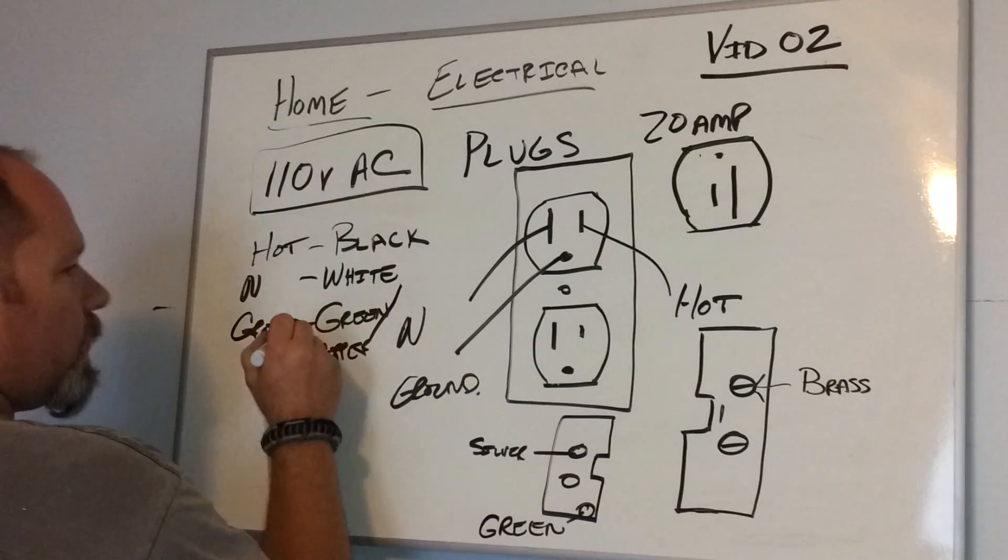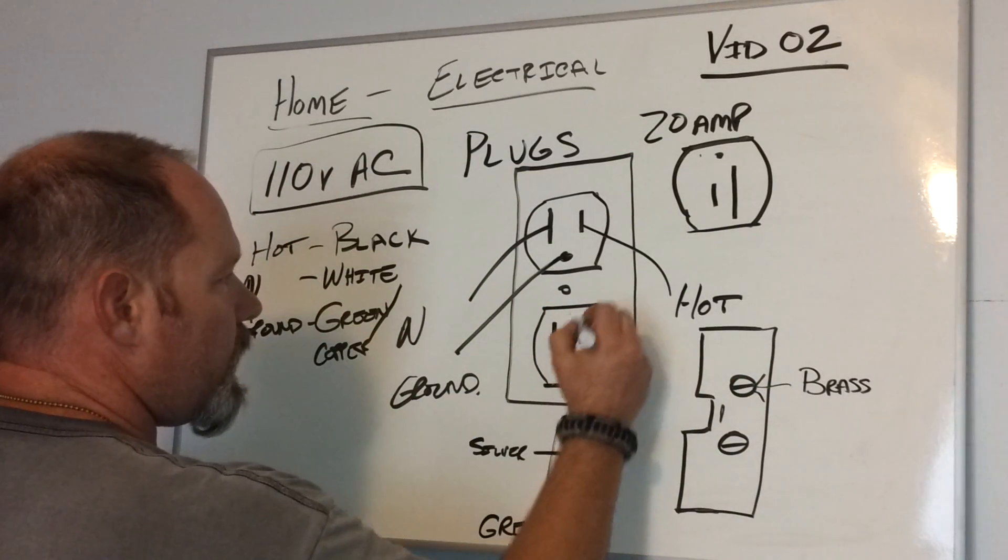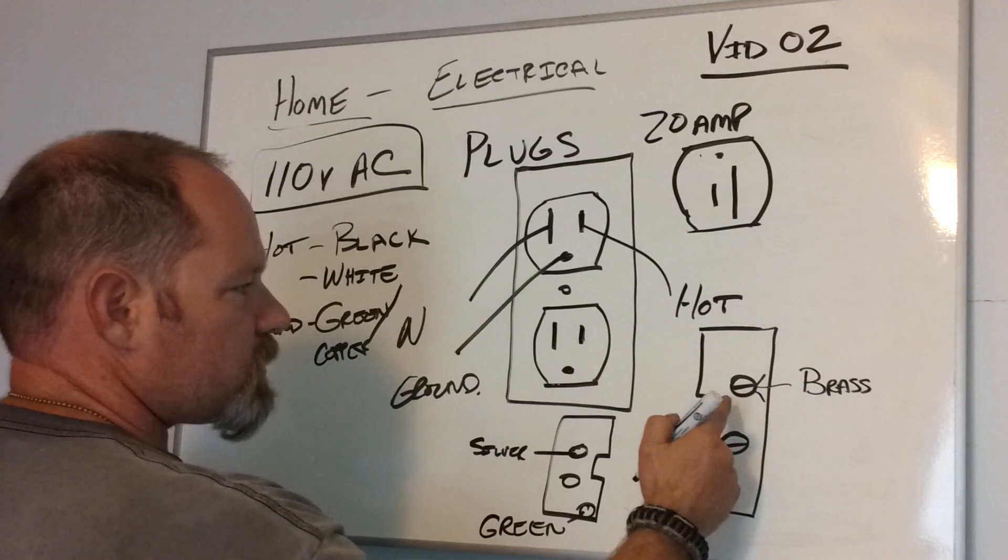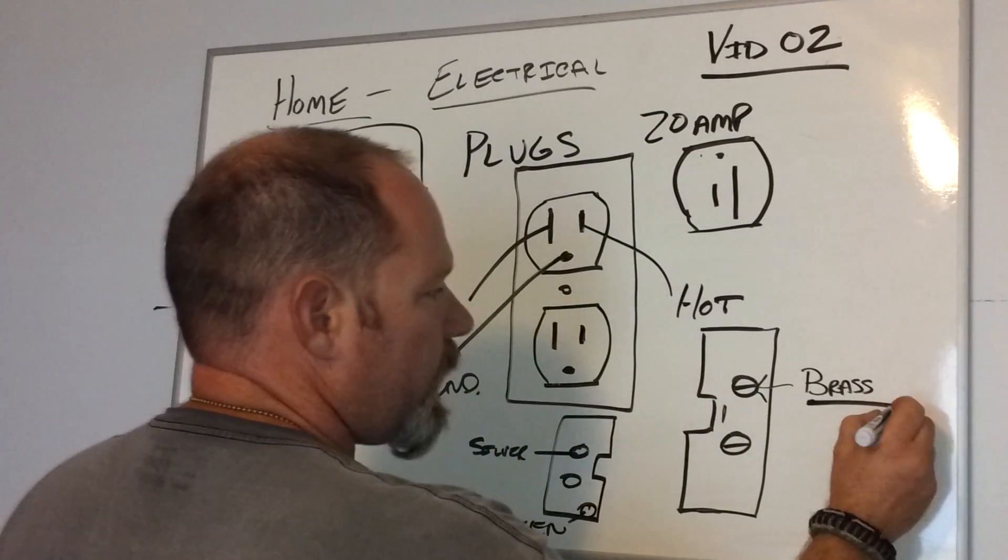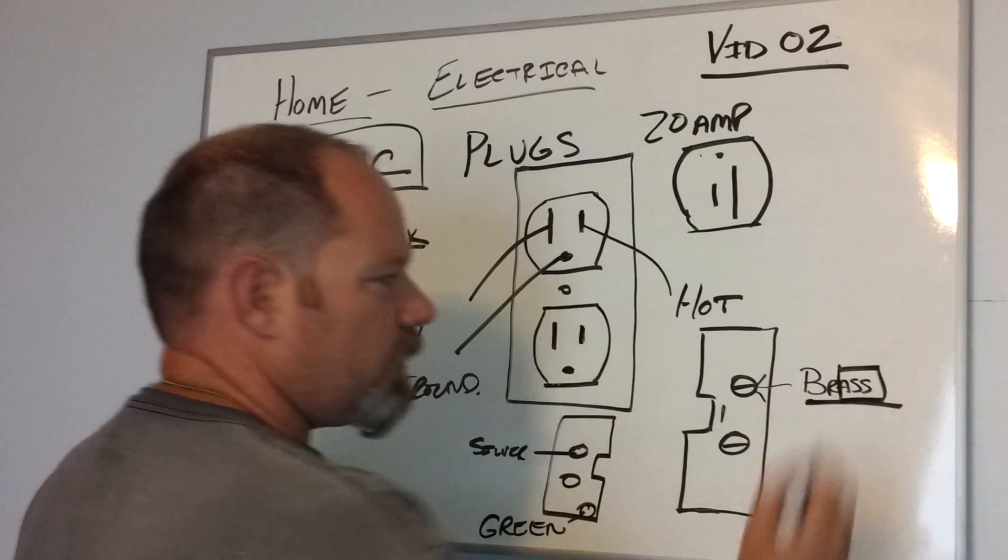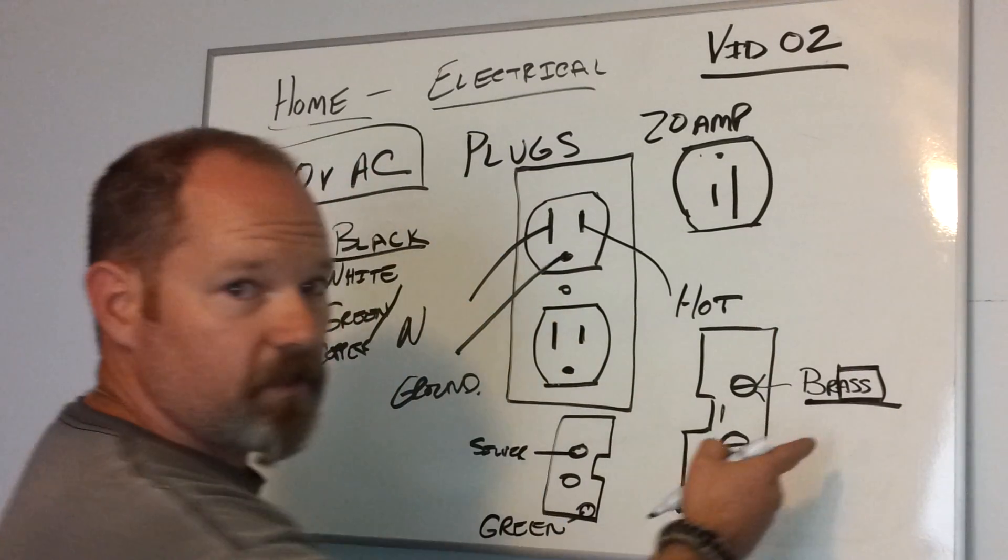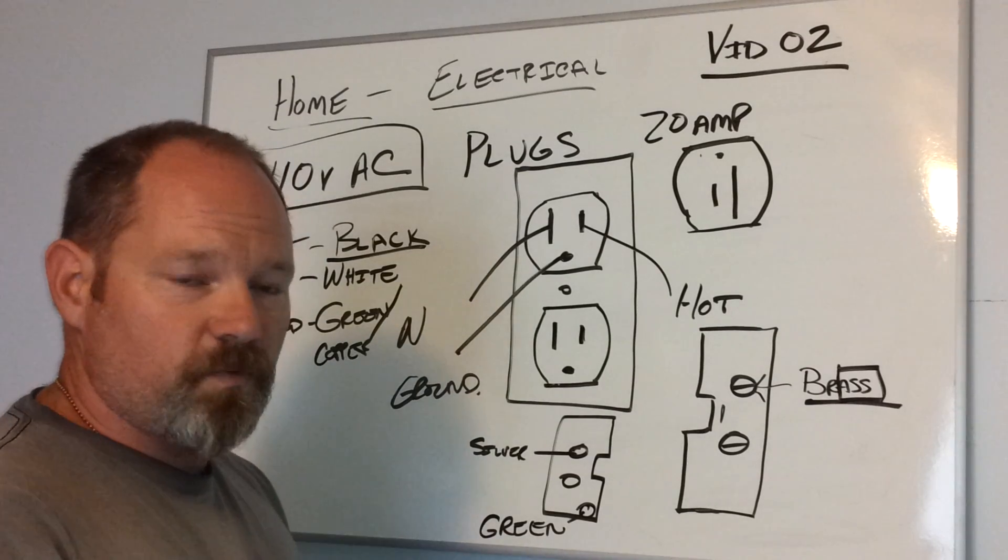Here's the way to remember which one of these is hot: look at the brass screw and you say, 'black on brass to save your...' and I'm not going to say it out loud. Black on brass to save your—that way you'll always remember that that one is the dangerous one.